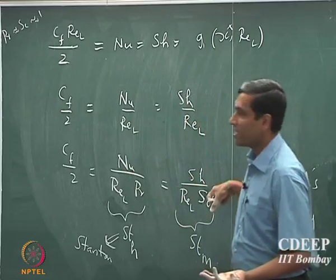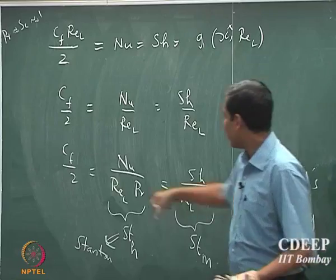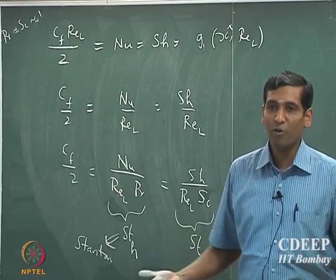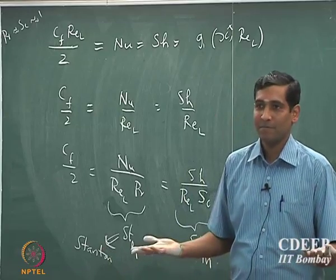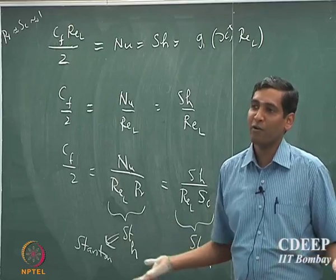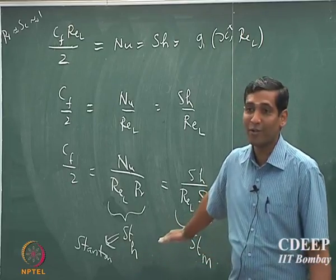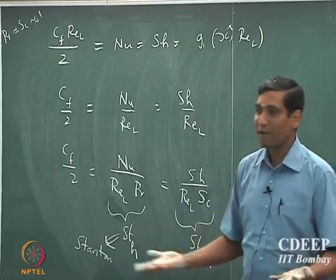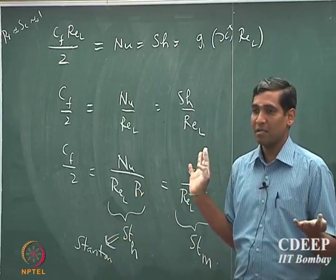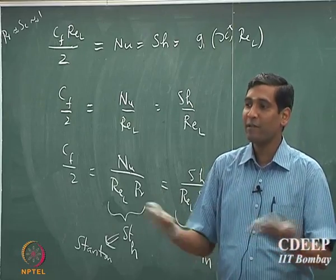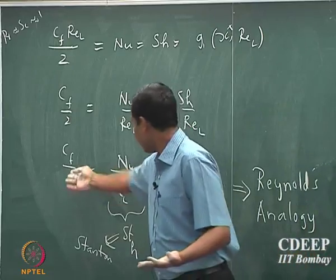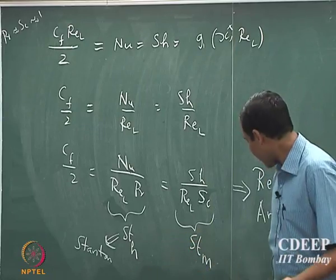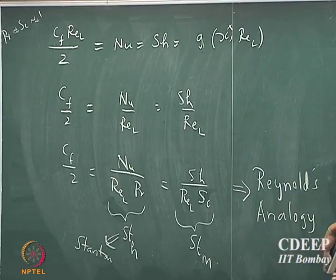The moment you know Nusselt number and Sherwood number, you have found the heat transport coefficient and mass transport coefficient. Remember, we have not even solved the equations yet. Without solving all three equations, if you know one of them — even experimentally measured — you are done. The others come for free. That is a very powerful method; that is the power of these analogies.